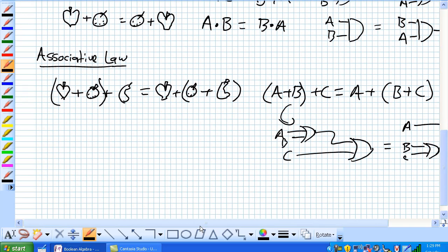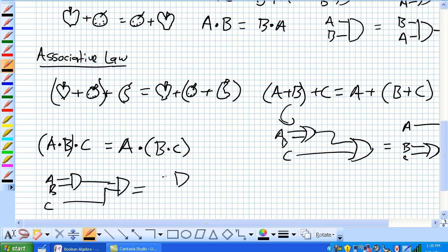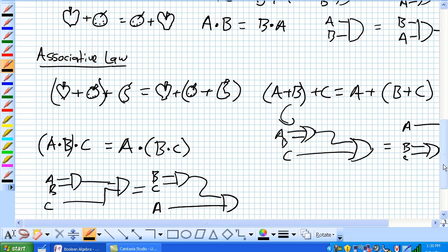Same thing holds for Boolean multiplication, if we remember right, is equivalent to our AND gate. So A and B and C is equivalent to A and B and C. How does this thing graphically look here? Here's our AND gate for A and B, and the result of that is ANDed with C is equivalent to B and C together, and the result of that is ANDed with A. You can do either one. Basically, you can move those parentheses around whichever way you want.